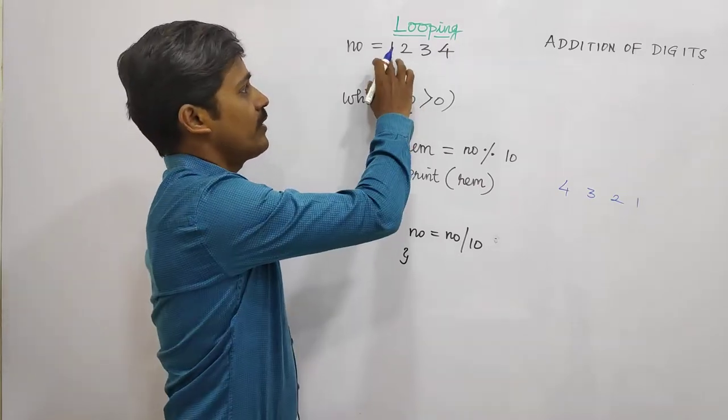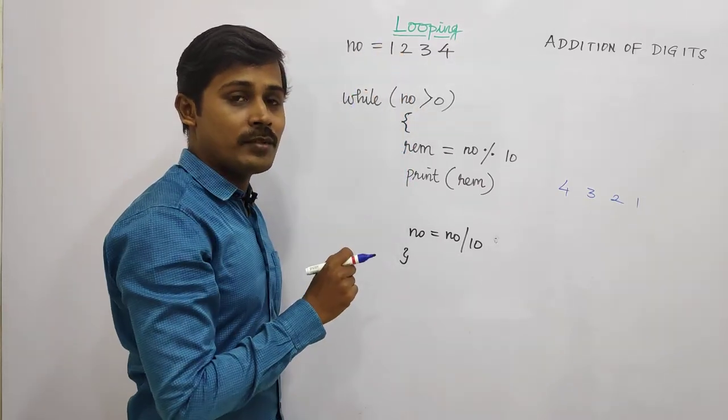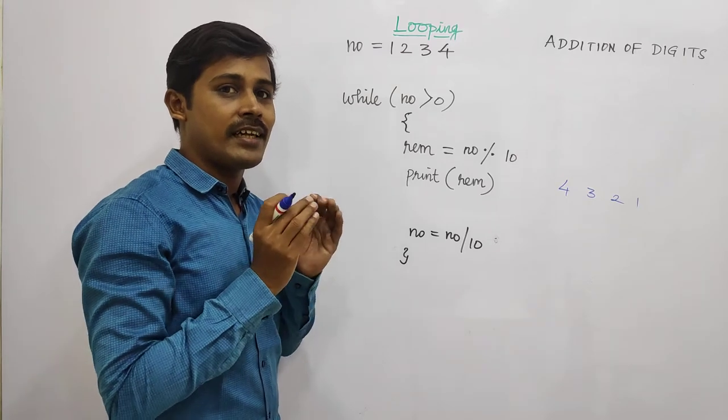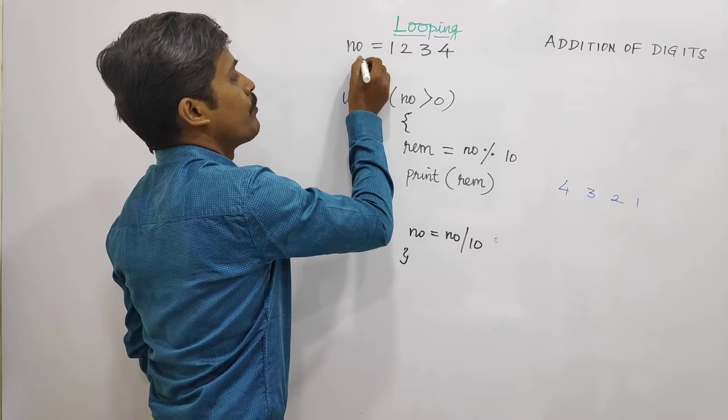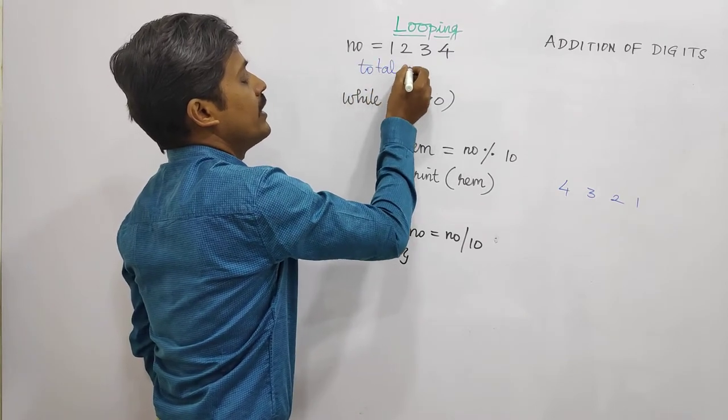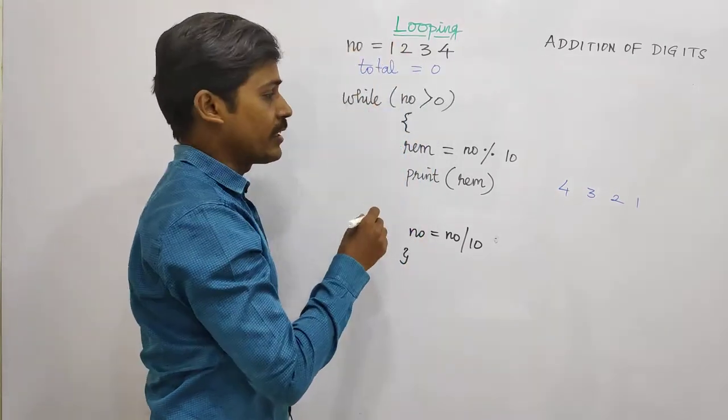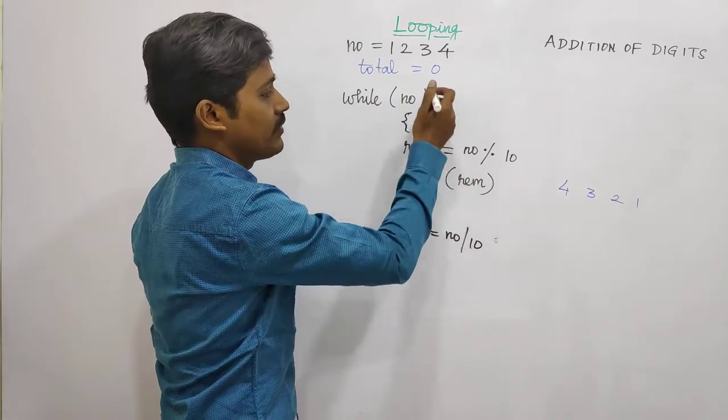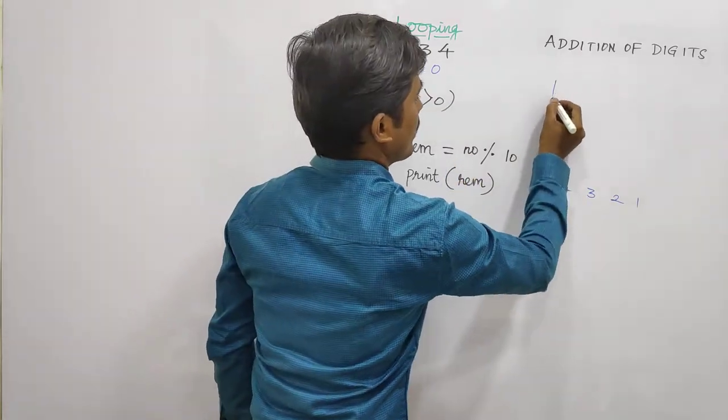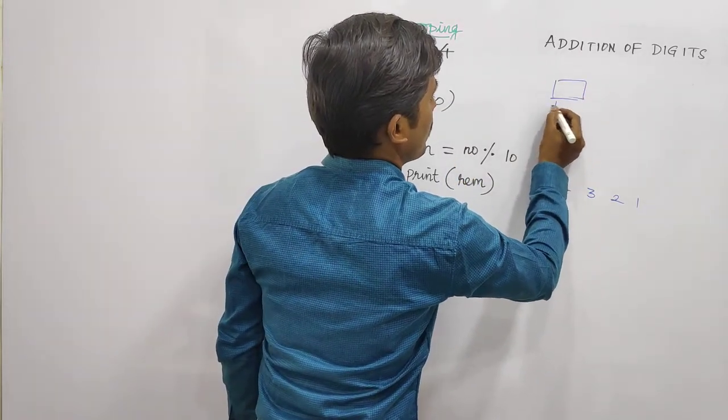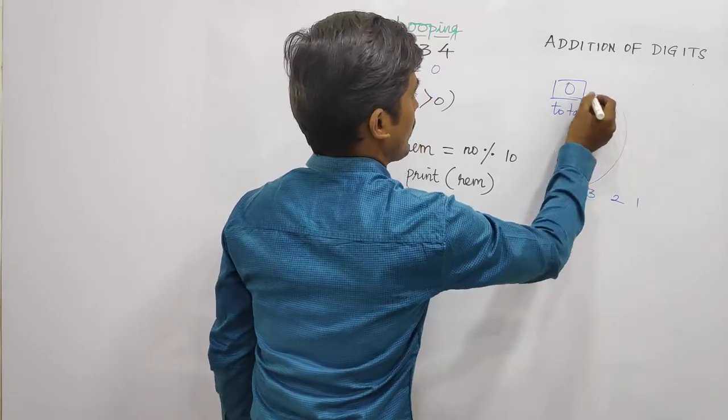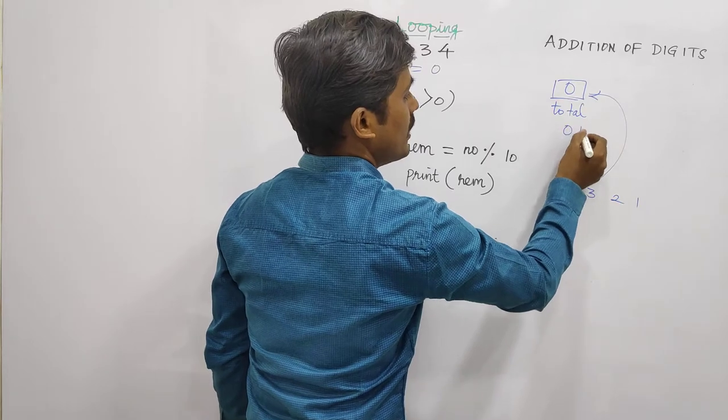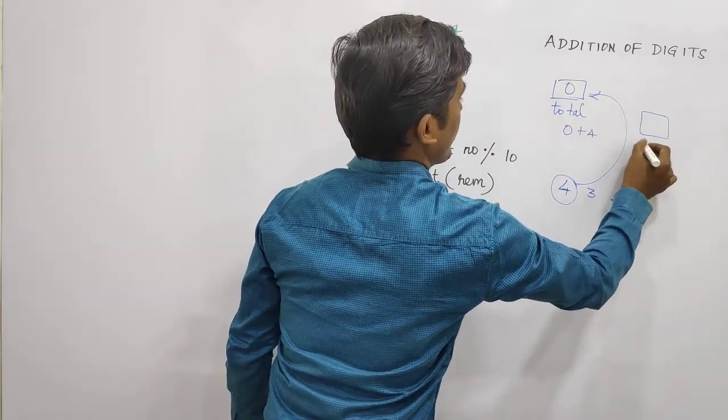Now we are here. If we are here, we can get the remainder of the program. Nothing has to be done manually. So we have to put total. I am going to add the remainder to the total. There is a remainder of the entire box.